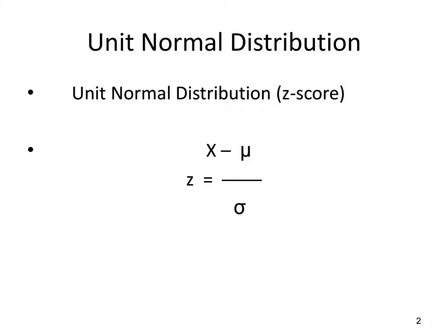The first thing you do is compute your z-score, which is simply taking x minus mu over the standard deviation. Remember that x is your raw score, mu is going to be given to you, as will the standard deviation, and you'll find your z-score.